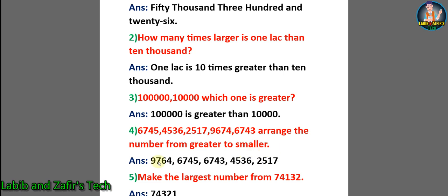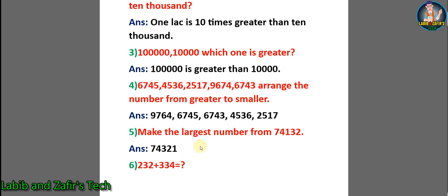From greater to smaller, the numbers are: 9,674, then 6,745, then 6,743, then 4,536, then 2,517. Number 5: Make the largest number from the digits 7, 4, 1, 3, 2. We put the greatest digit first: 7, then 4, then 3, then 2, then the smallest, 1. That is, 74,321.